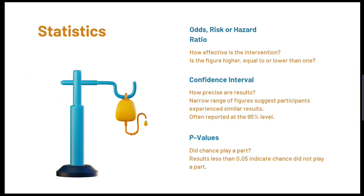With cohort studies you will potentially see statistics which help you to appraise the results. You may see an odds, risk or hazard ratio which demonstrates whether the study favoured the intervention or not. These figures are interpreted by whether the ratio is lower, equal to, or higher than one. A figure less than one shows the chance of the outcome occurring in the intervention group is lower than the comparison group, while a figure higher than one shows the opposite. A figure equal to one would suggest no difference between the groups.